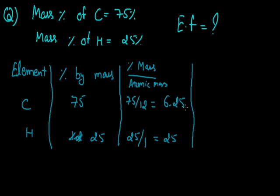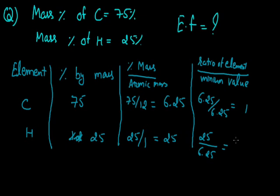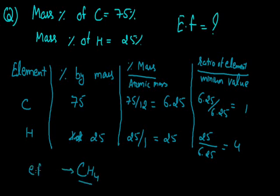To get the simplest ratio, we divide both molar ratios by the minimum value, 6.25. For carbon: 6.25 divided by 6.25 gives a ratio of 1. For hydrogen: 25 divided by 6.25 gives 4. Both values are whole numbers, so we do not need to apply the third step. The empirical formula contains 1 atom of carbon and 4 atoms of hydrogen, written as CH4. That is the empirical formula of this compound.